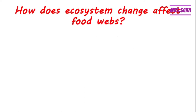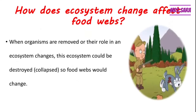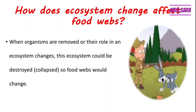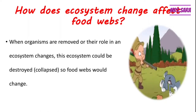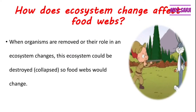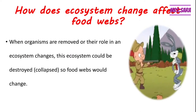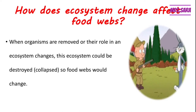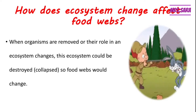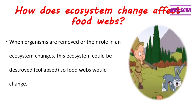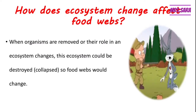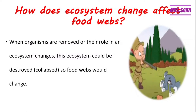How does the ecosystem change affect the food web, Primary 5? When the organisms are removed or the role in the ecosystem changes, the ecosystem could be destroyed or collapsed. So the food web would change. When an animal dies or moves to another place or is eaten by another animal, this ecosystem could be destroyed or collapsed, and the food web would change.